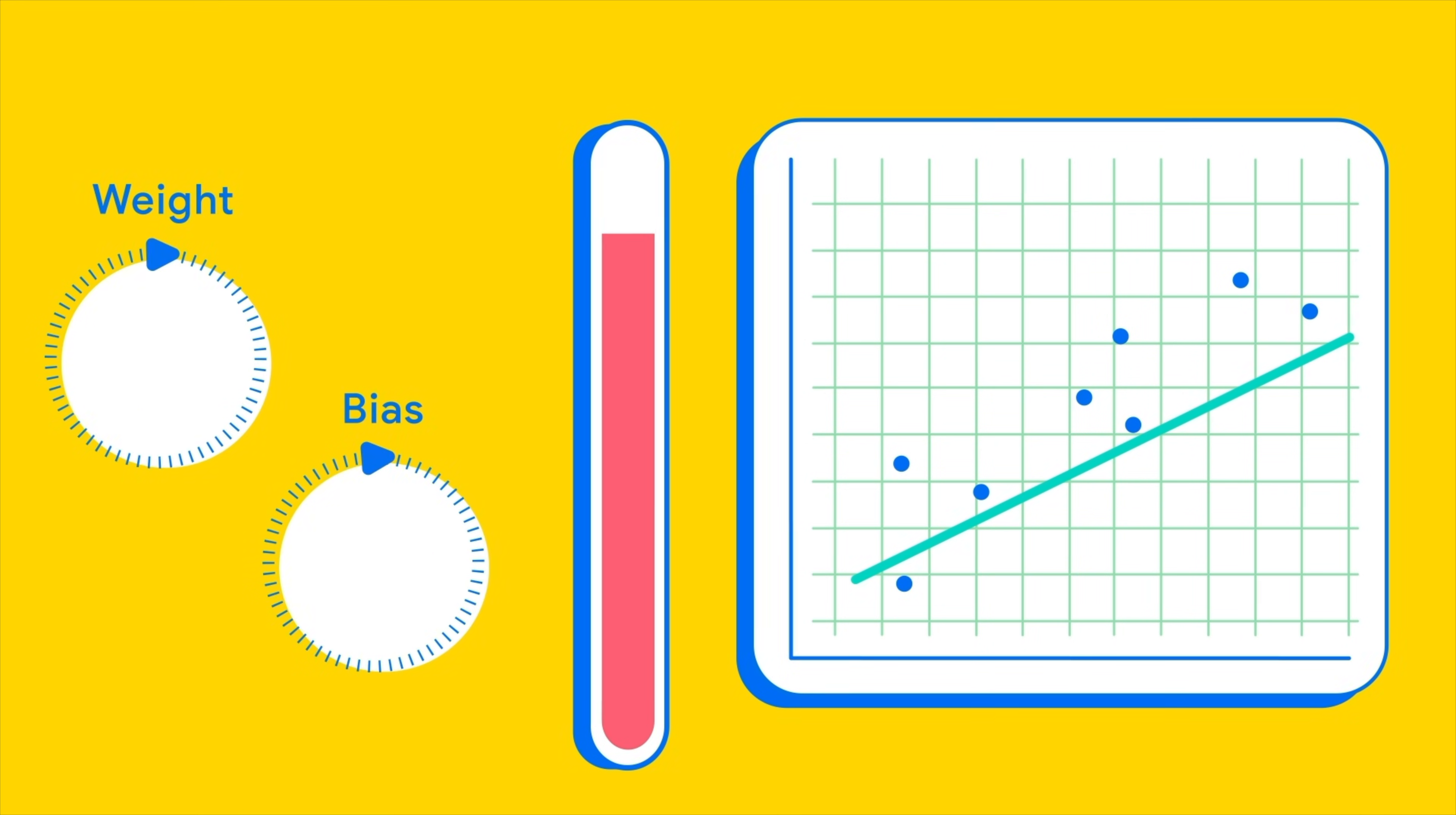Thus far, we've developed great techniques for modeling linear relationships in data. Algorithms like gradient descent automate the process of finding the best parameters for a linear model.